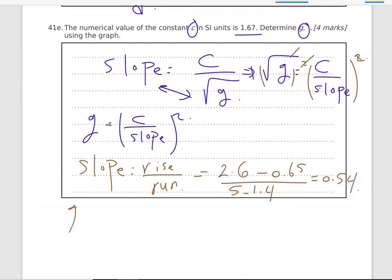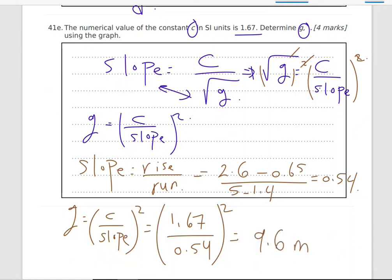So I mean the value of G. We say G equals C over the slope square. C is 1.67 divided by 0.54, all of them to the power 2. This will be around 9.6. The units for freefall acceleration is meter per second square. We're done with question 41.